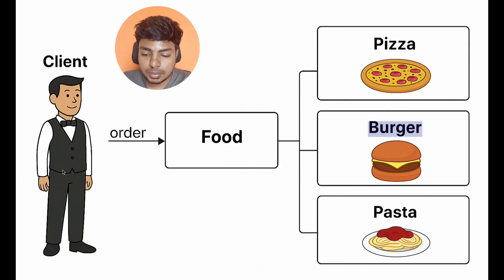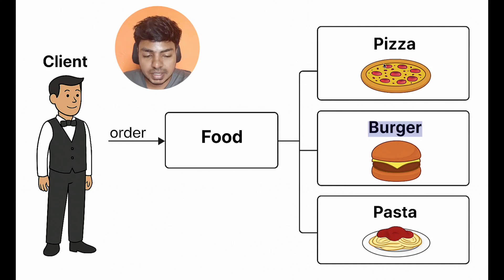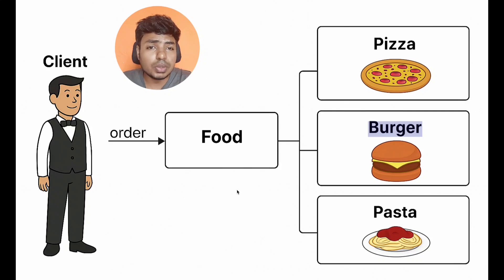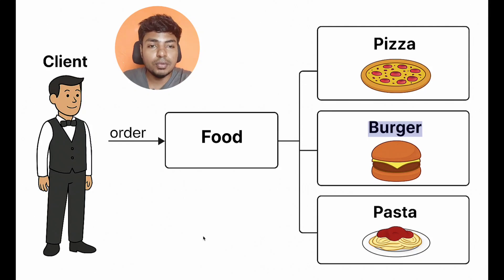The first person is the customer. The customer requests the food. The app currently supports Pizza, Burger, and Pasta. A customer comes in, they place an order through the app or at the restaurant. Now, without a factory, the customer is going directly to Pizza, Burger, and Pasta — interacting with those food classes directly.